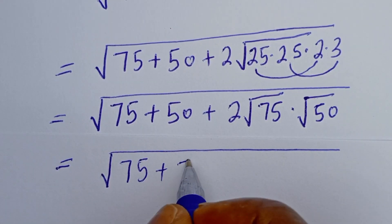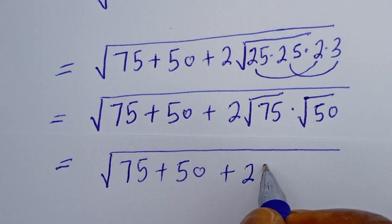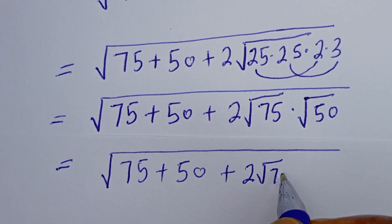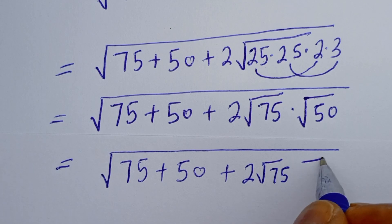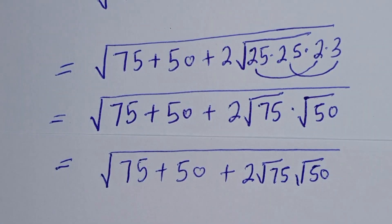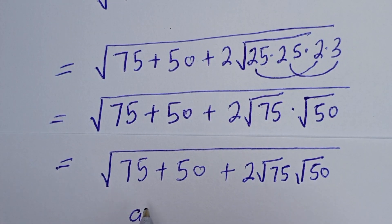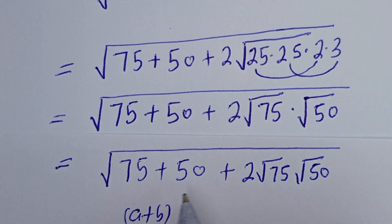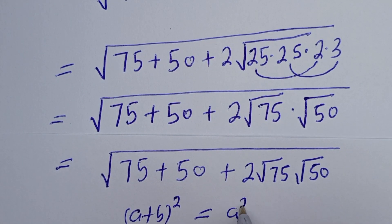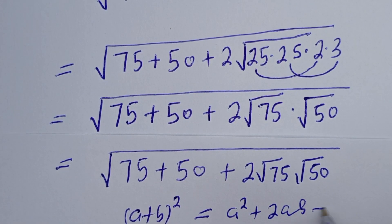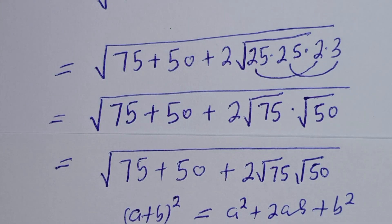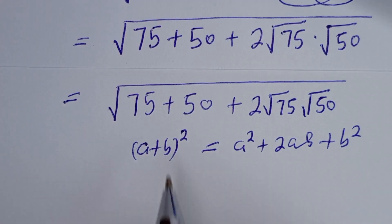If you have a plus b all squared, this is equal to a squared plus 2ab plus b squared. And from here,